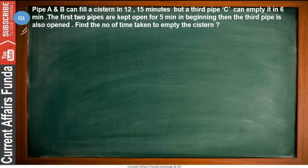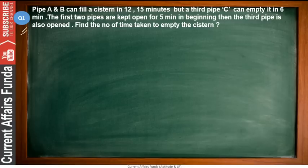Our first question: Pipe A and B can fill the cistern in 12 and 15 minutes respectively. A third pipe C can empty it in 6 minutes. The first two pipes are kept open for 5 minutes in the beginning, then the third pipe is also opened. Find the total time taken to empty the cistern.